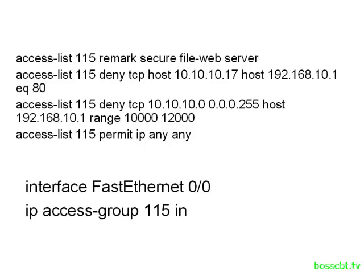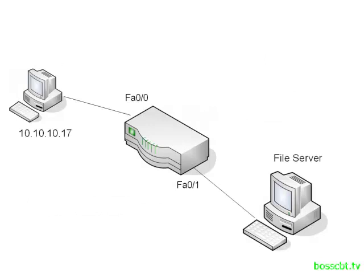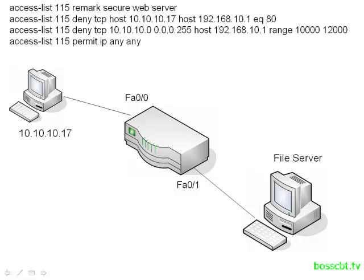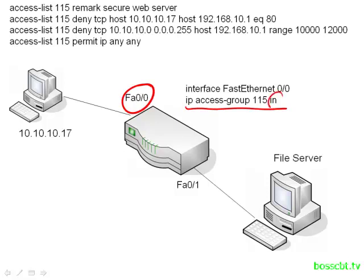When we go to apply this, it's the same method as applying a standard access list. We go into the interface — this is an interface subcommand — and use the IP access-group command, specifying the number and then the direction. Here we're applying this to inbound traffic. Going back to our diagram, the general rule is to apply an extended access list close to the source, so we apply this on FA0/0 using IP access-group inbound. Anything generated from the PC or anyone else on that subnet will be affected before it reaches the routing stage on the router.